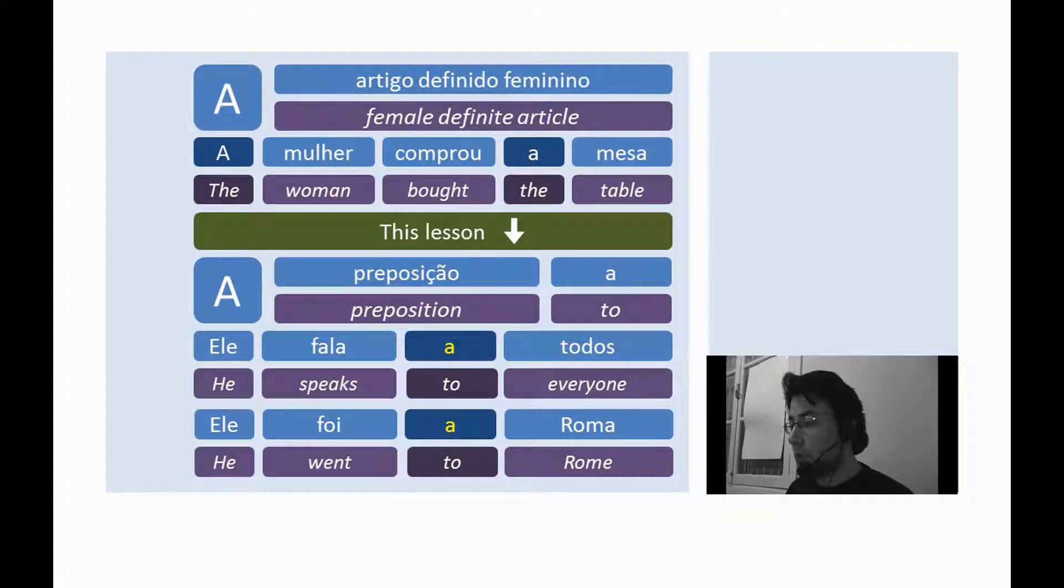In other lesson, we have already seen that a can be a female definite article. Example, a mulher comprou a mesa. The woman bought the table. In this lesson, we will see the preposition a. It is many times translated as to. The preposition a can express many relations. As movement, place, manner, or reference.